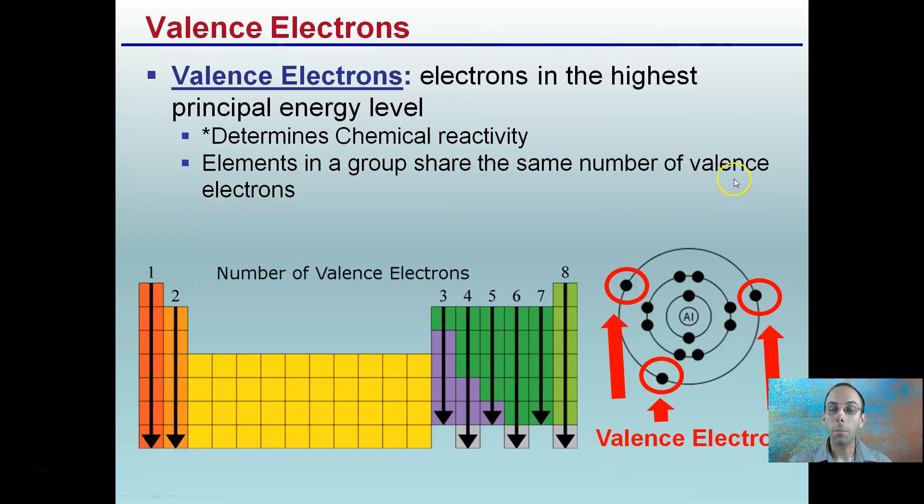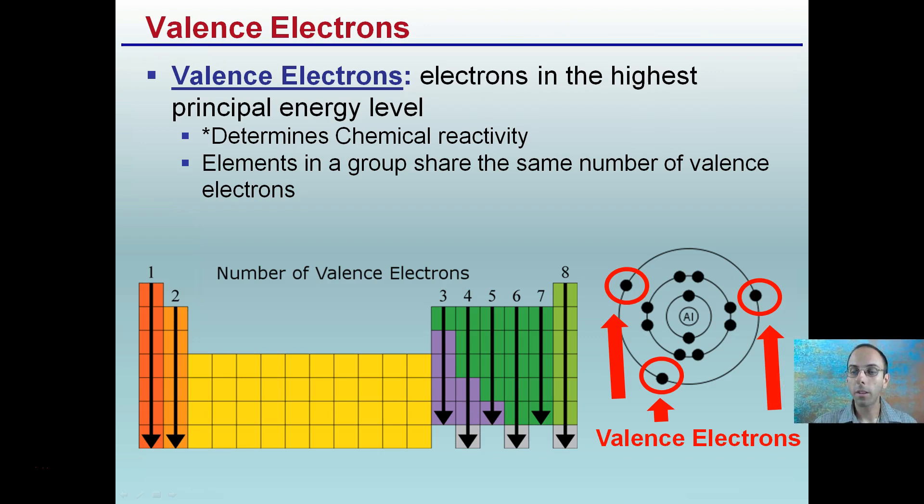These valence electrons that I mentioned, valence electrons here are the ones on the outside. These electrons are in the highest principal energy level, and they determine the chemical reactivity. An important note to make there. Elements in a group share the same number of valence electrons. All of these have eight valence electrons, seven and six and five and four and three and two and one.